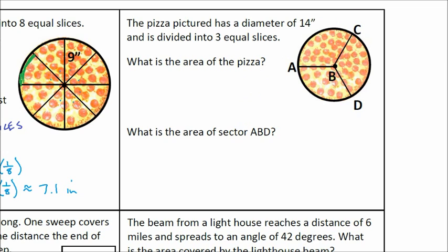Well, to find area, we have to know radius. We don't know radius, but we know diameter. Radius is equal to diameter divided by 2, which is equal to 14 divided by 2. So the radius is 7 inches.